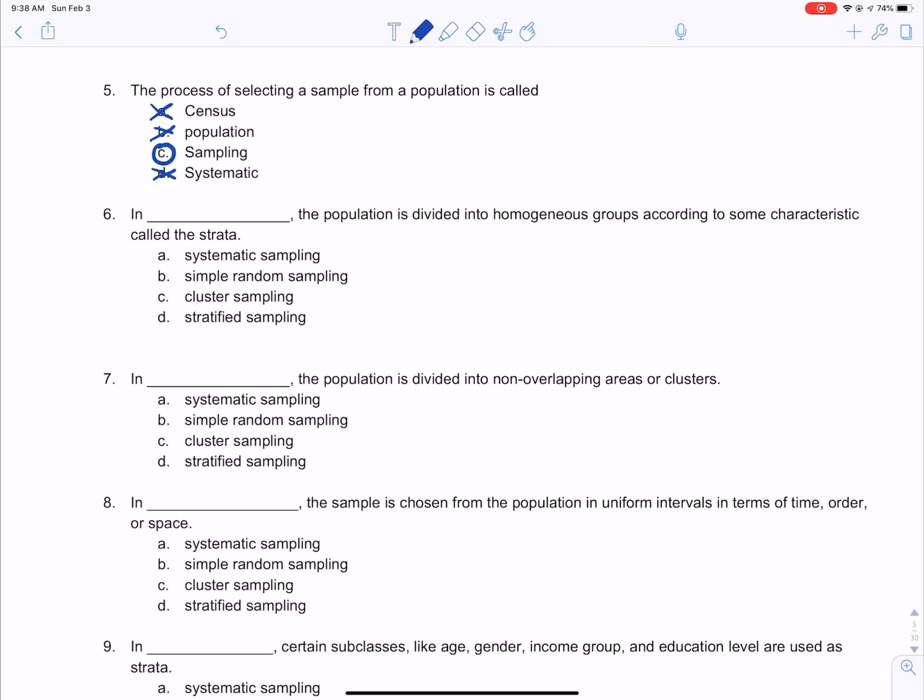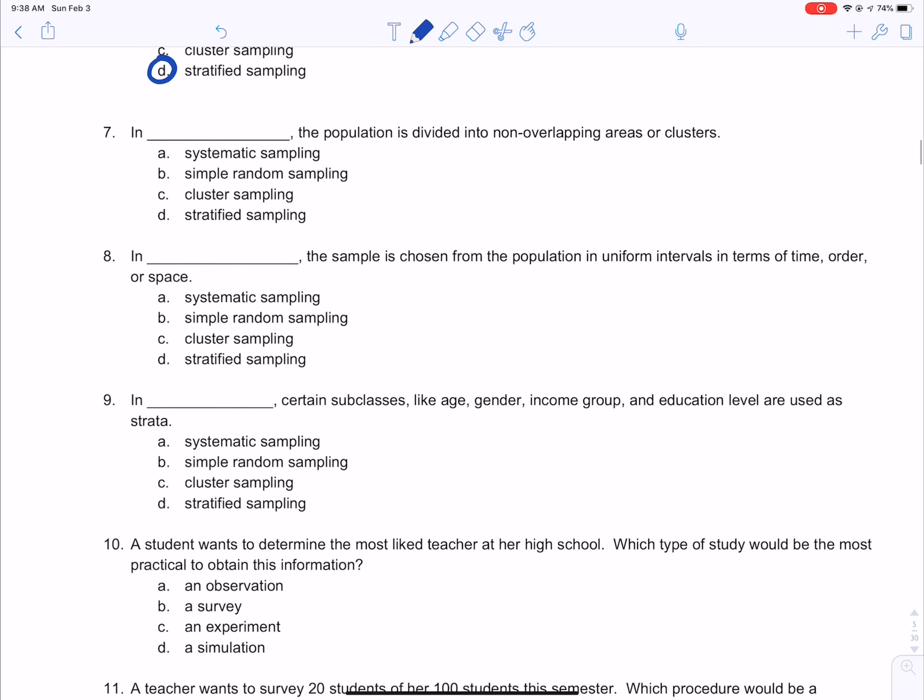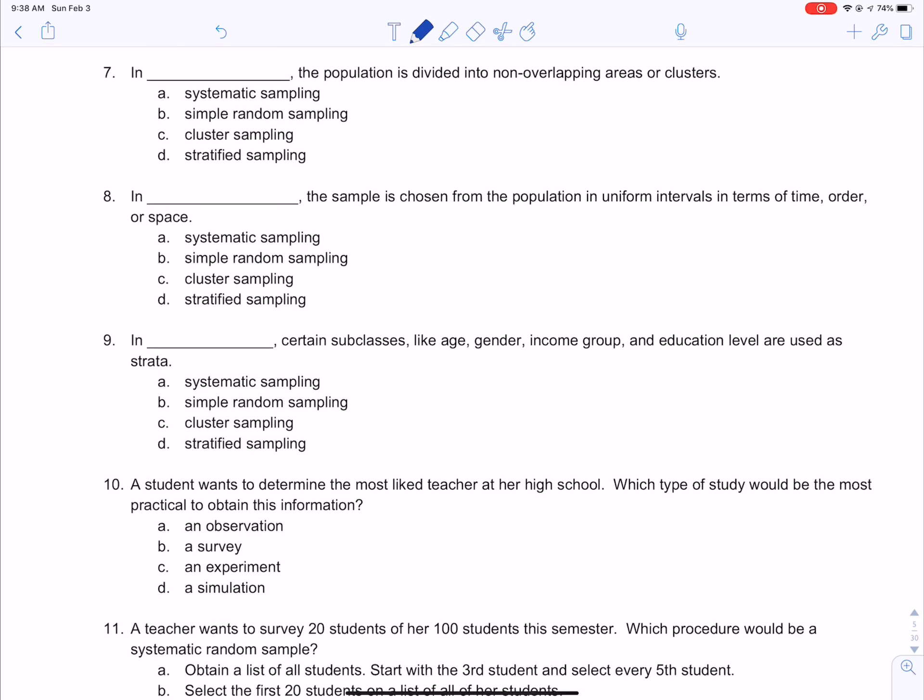In blank, the population is divided into homogeneous groups according to some characteristic called strata. So that is stratified sampling, like it sounds. In blank, the population is divided into non-overlapping areas or clusters. So that would be cluster sampling, like it sounds. Some of these are kind of obvious.